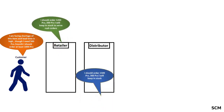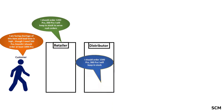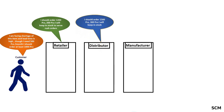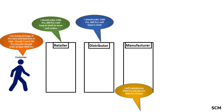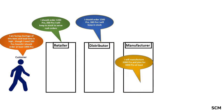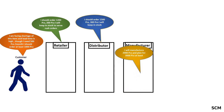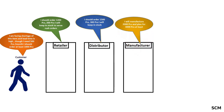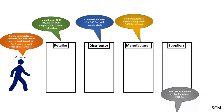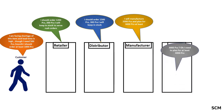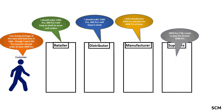Further, the distributor plans 300 pieces more, giving an order of 1,500 pieces to the manufacturer. In turn, the manufacturer plans 2,000 pieces production and gives raw material forecasts to the supplier for 3,000 pieces, keeping 1,000 pieces as safety stock. Now the supplier plans for 4,000 pieces to achieve economies of scale.